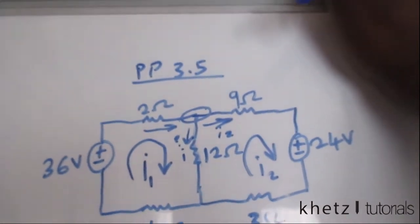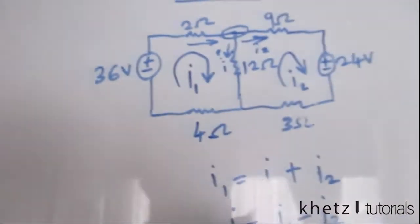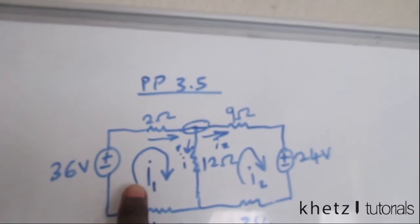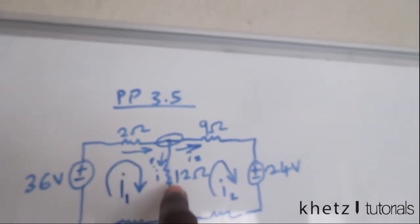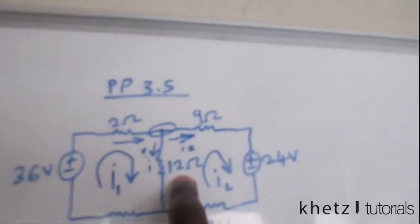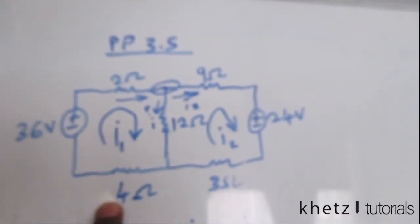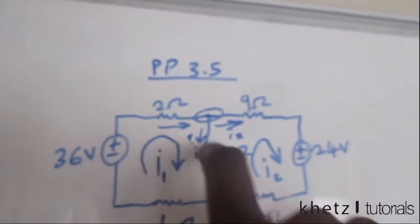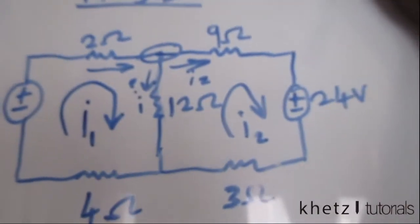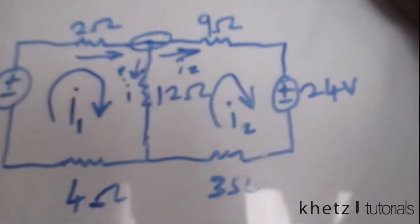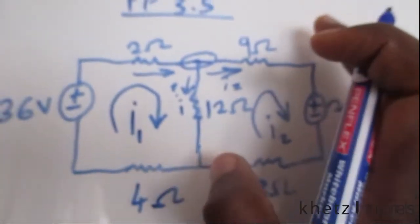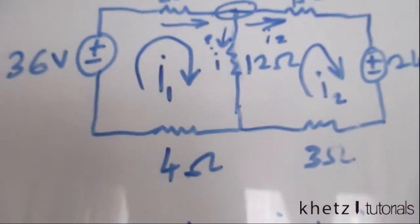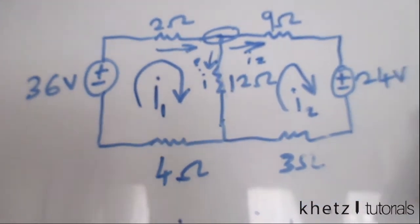Starting in the first mesh where we find i1 — starting with the voltage source here, the path goes into the negative terminal of the voltage source first, then continues around the loop. Let's make sure the number of terms in your equation matches the number of elements or branches in your circuit, because you could always forget one, like the one at the bottom.